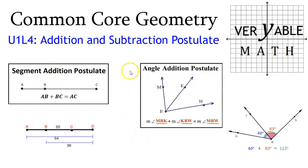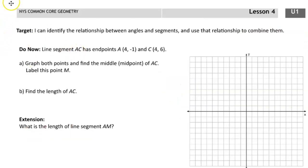And secondarily, if we take out one piece of an entire diagram, the piece that's left over is equal to the difference between those two pieces. I'm going to walk you through some of the notes and try to make sure that you understand. First, let's take a look at the learning target. Today we're going to be identifying the relationship between angles and segments and using that relationship to combine them.